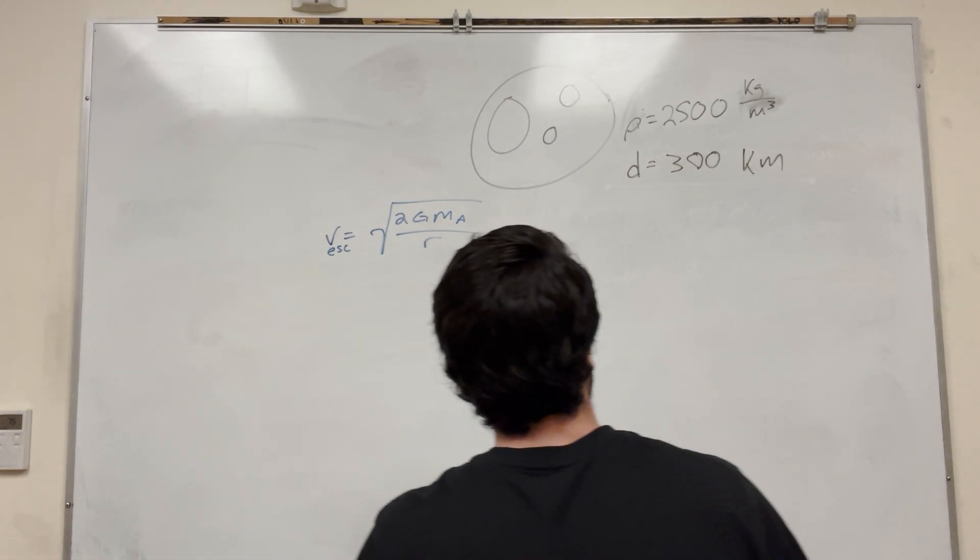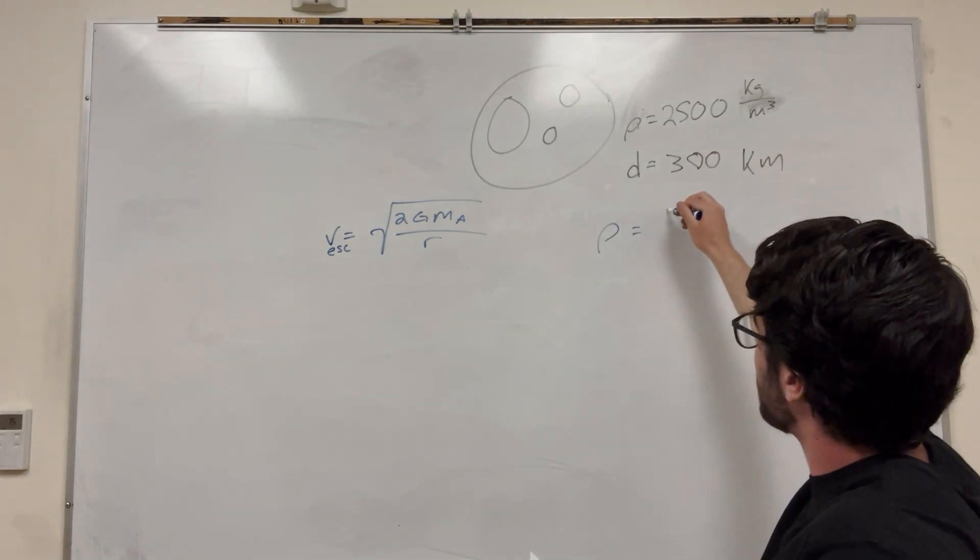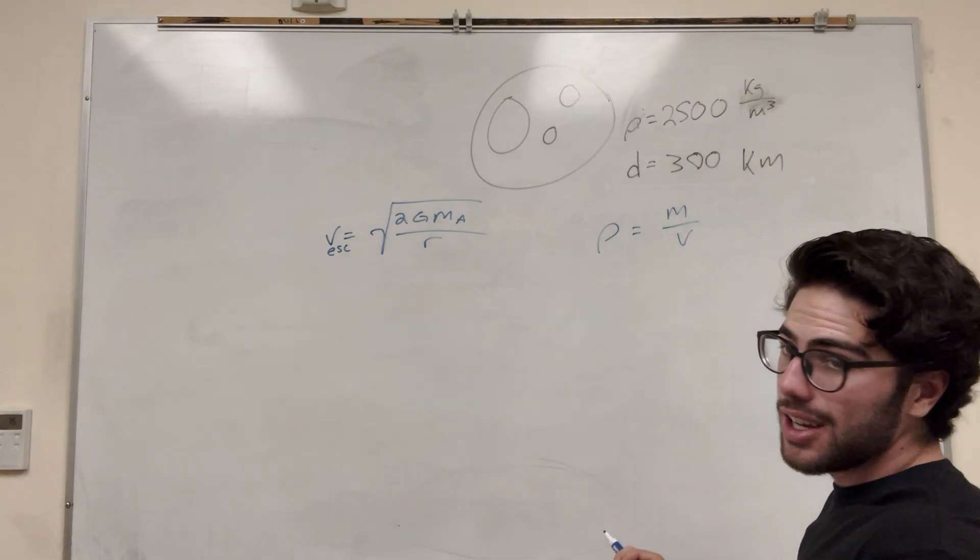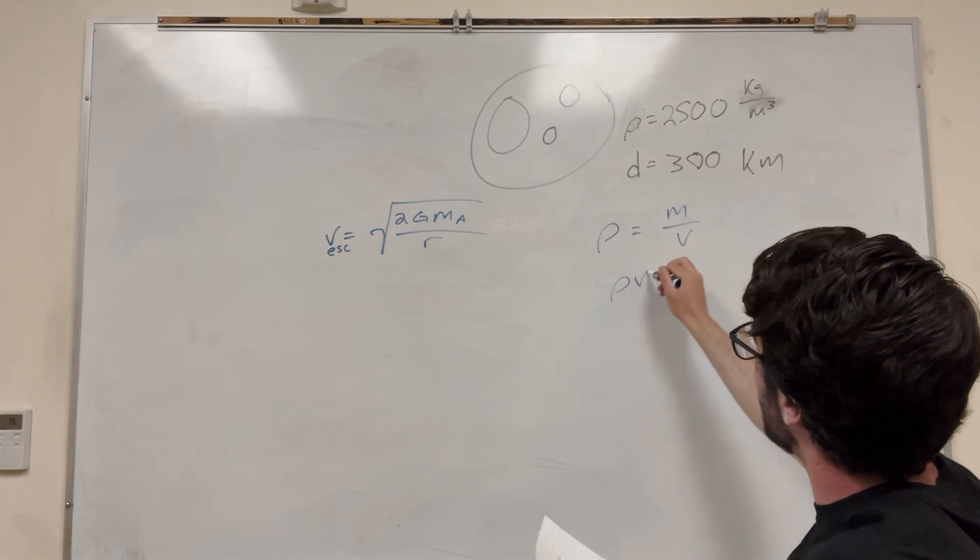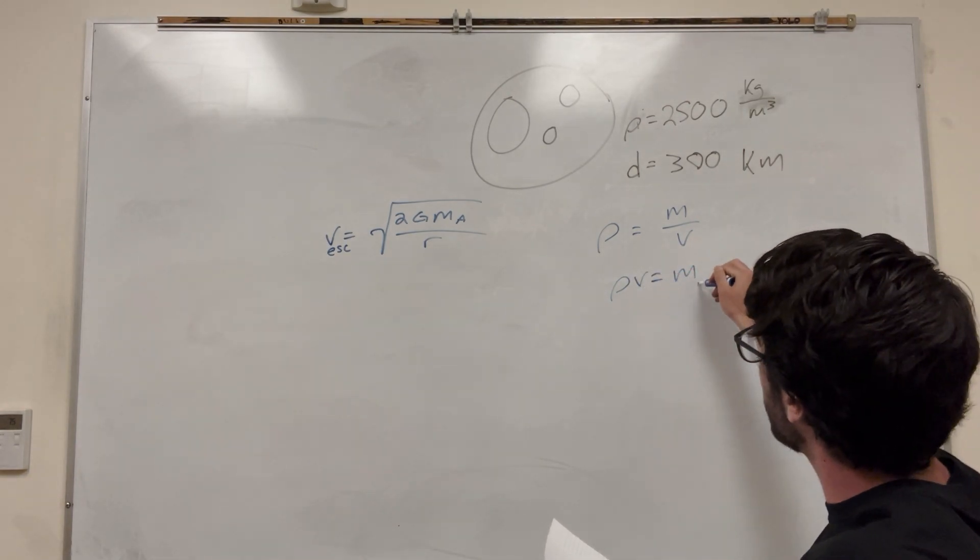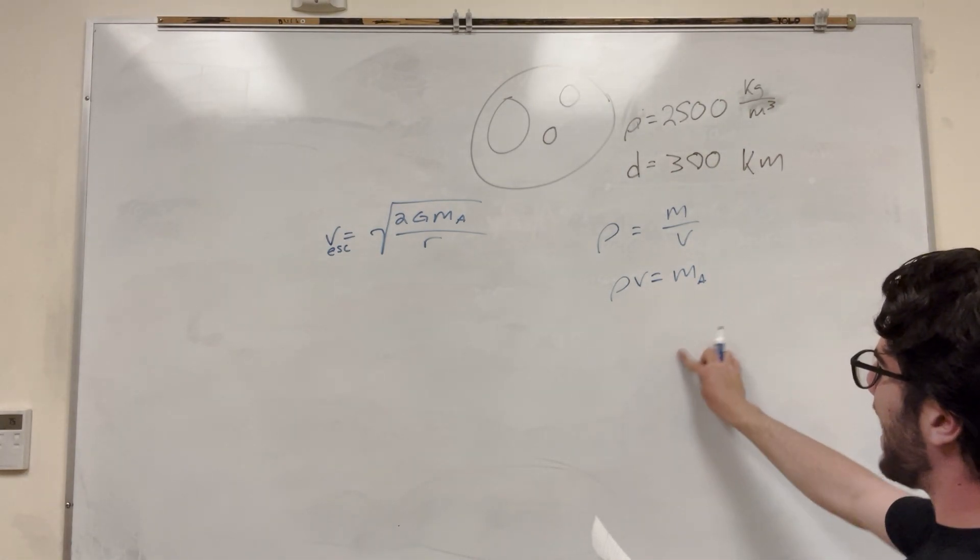So we have the density equation. We know its density, so density equals mass over volume. We're trying to find the mass, so density times volume equals the mass of the asteroid. We know its density. Do we know its volume though? We don't know its volume yet, but we can calculate that.